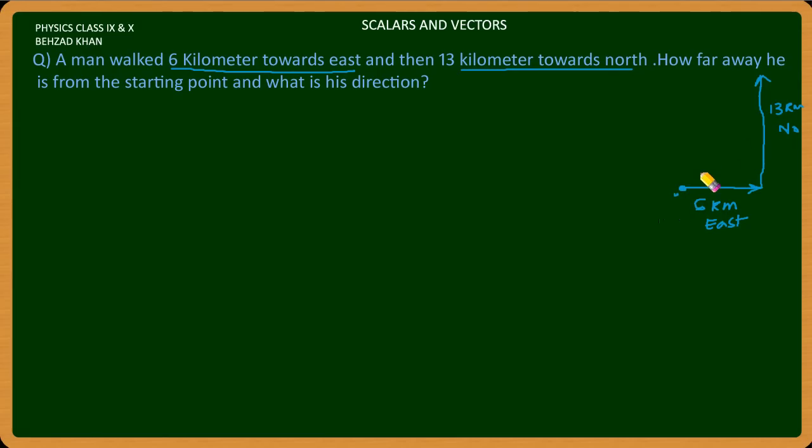You have to know this distance, this is the resultant distance which you have to find. So let's take a look at this. d1 is six kilometer, d2 is 13 kilometer, and this is d3 which we have to know.